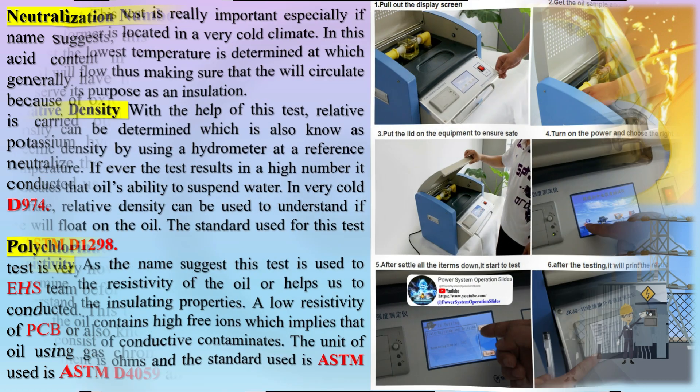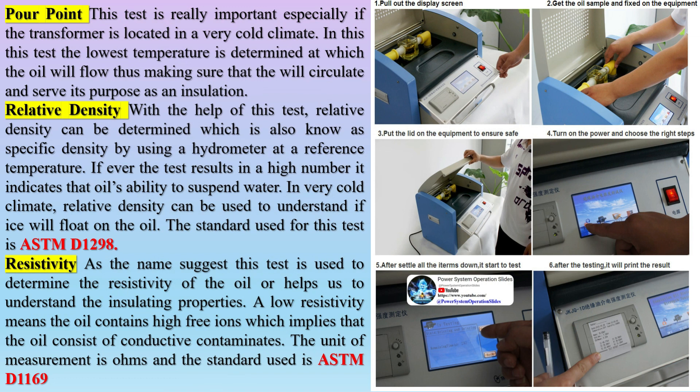Relative density: with this test, relative density — also known as specific gravity — can be determined using a hydrometer at a reference temperature. A high result indicates the oil's ability to suspend water. In very cold climates, relative density can be used to understand if ice will float on the oil. The standard used for this test is ASTM D1298.